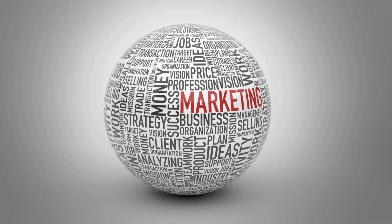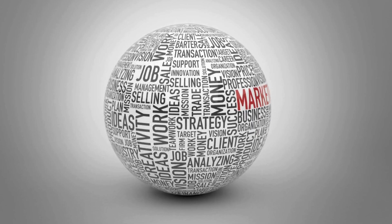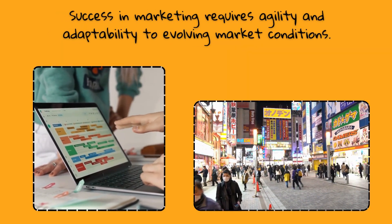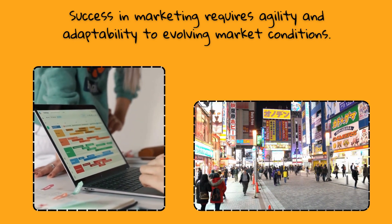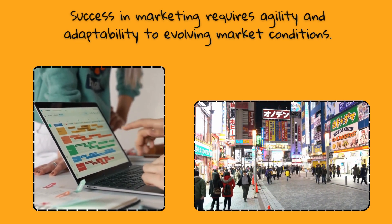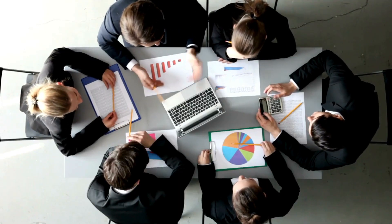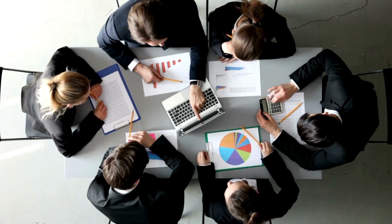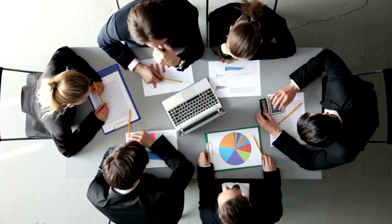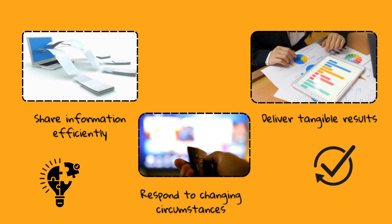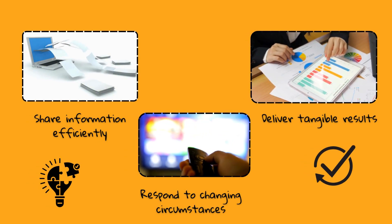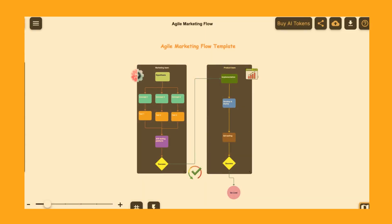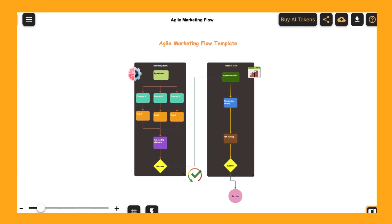Marketing is a highly complex domain. To be a successful marketer, it is essential to be agile and adaptable to changing market circumstances. Often this is not possible unless both the marketing and product development teams learn to work in tandem, efficiently sharing information, responding to ever-changing circumstances, and delivering results on the ground. Introducing the Agile Marketing Flow Template.